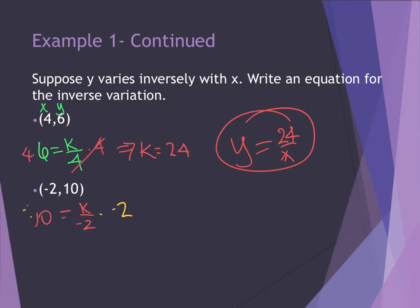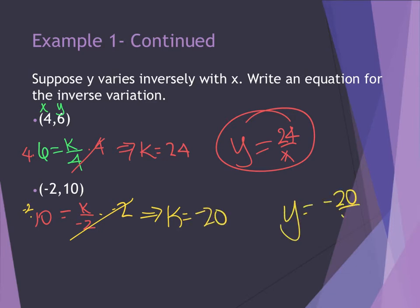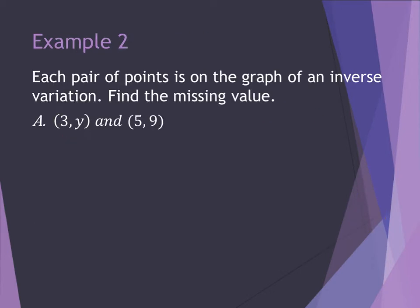Multiplying by negative 2, these cancel, giving me k equals negative 20, so I have y equals negative 20 divided by x.